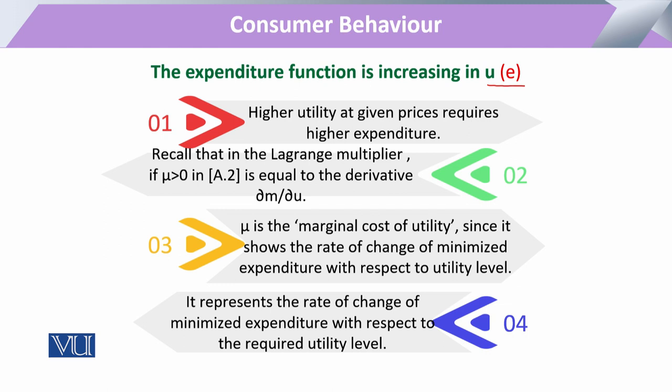The Lagrange multiplier ascertains that it is equal to the change in money expenditure with respect to the change in utility. So whenever we change our utility, with respect to that, our amount of money or expenditure will also change.